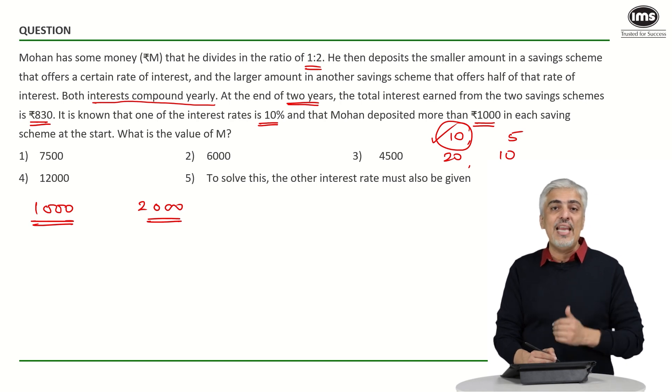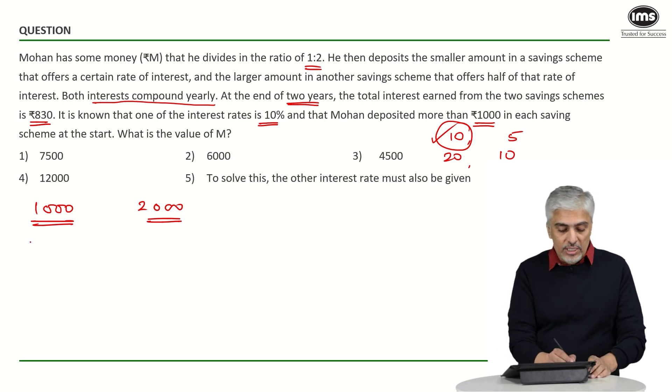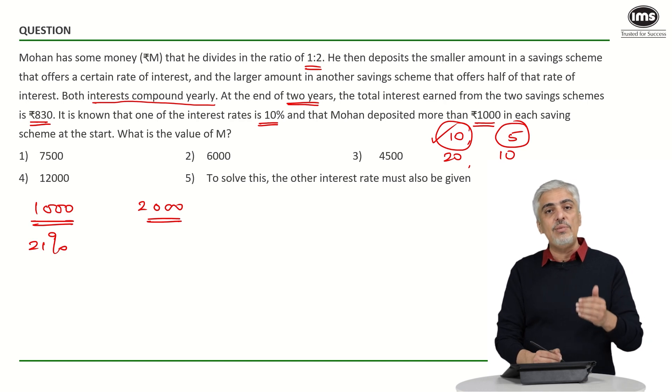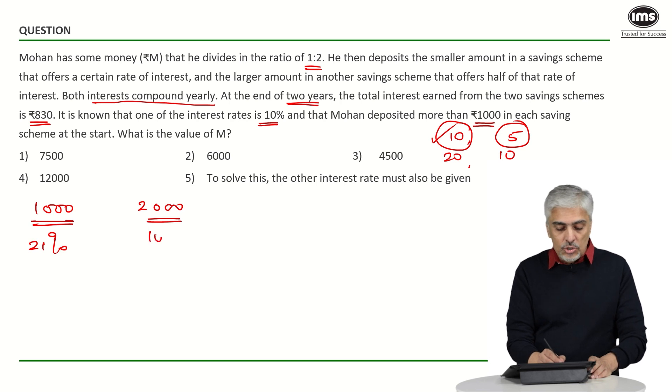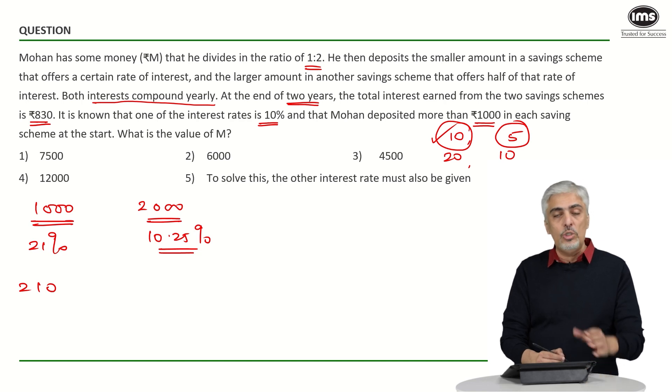So, it will be 10 plus 10 plus AB upon 100 that is 21%. So, the rate of interest for 2 years will become 21% and for second scheme it is 5%. So, again use A plus B plus AB upon 100 will be 5 plus 5 plus 0.25. So, it will be 10.25%. Now, how much is 21% of 1000? It will be 210 rupees and will be 10.25% of 2000.